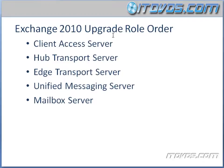The Exchange 2010 upgrade role order is: first, the client access server — we need to deploy that, get it configured and set up — then hub transport, then edge transport, then unified messaging, and then finally the mailbox server. So if you're deploying a physical server for each one of these roles, you're going to do it in this exact order.